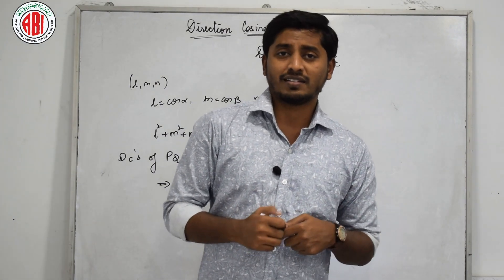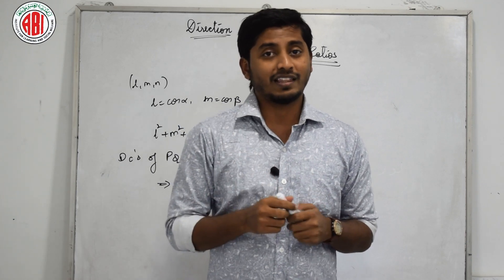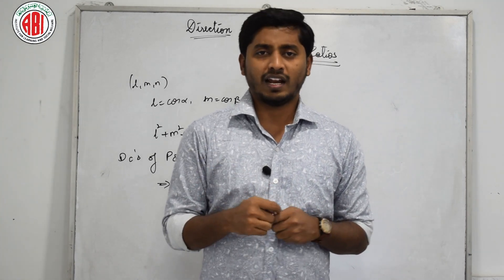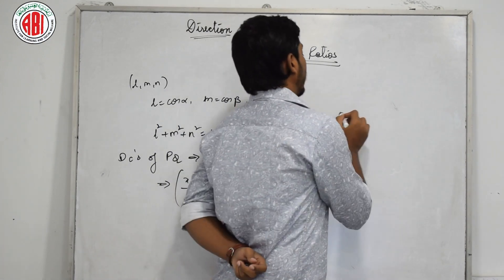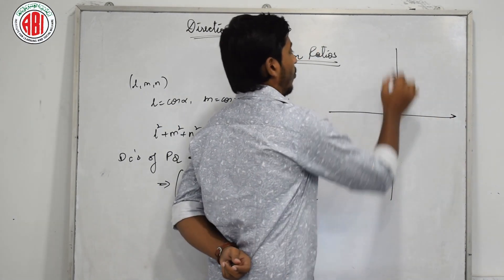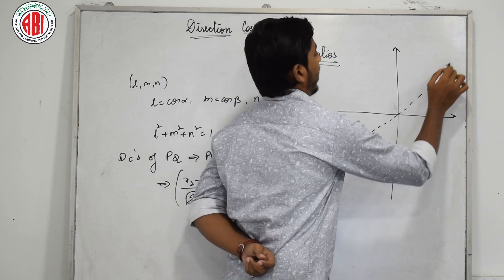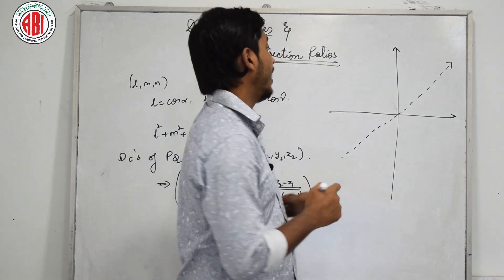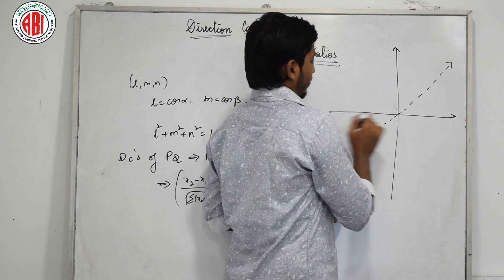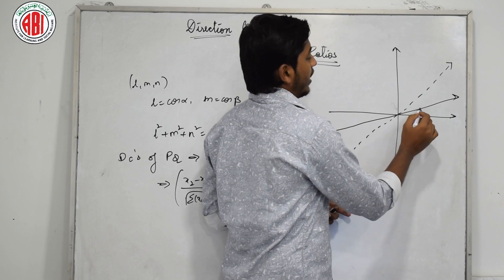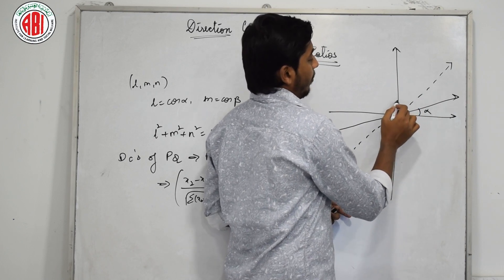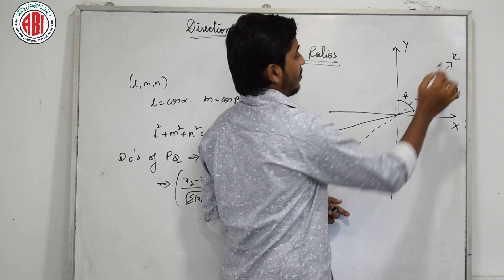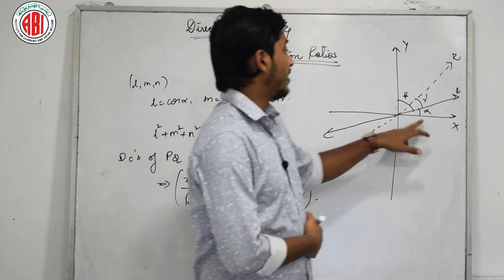What do you mean by the term direction cosines? From the term itself you can identify that we are going to discuss something involving the cosine of a 3D geometry. For example, if there is an x-axis, y-axis, and one more z-axis, and there is a particular line — let us say some line PQ — which is making an angle alpha. This line makes angle alpha with the x-axis, beta with the y-axis, and gamma with the z-axis. This is some line L.